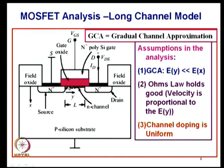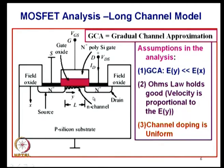The most important simplification in Shockley's analysis is the GCA — gradual channel approximation — which assumes that the electric field along the channel (y-direction) is much smaller than the field in the vertical direction (x-direction). This means two-dimensional effects can be ignored when solving for carrier concentration, and Poisson's equation is solved only in the one-dimensional x-direction. This assumption fails at high fields in the y-direction, where other methods are needed.